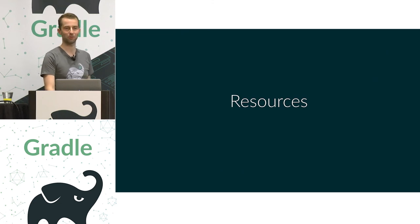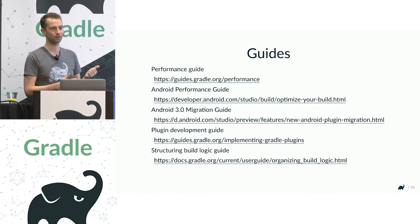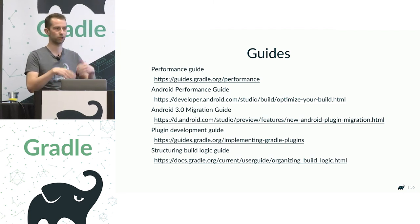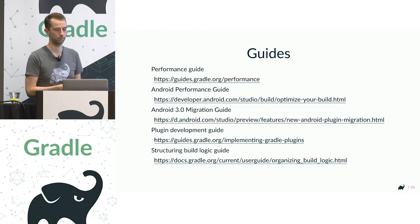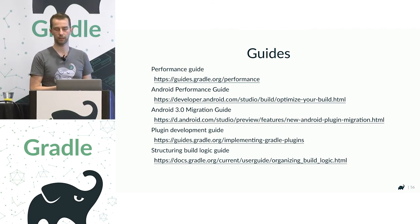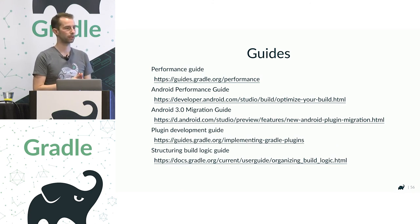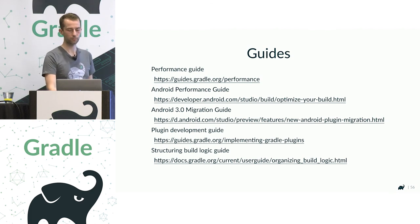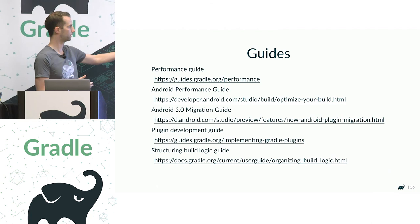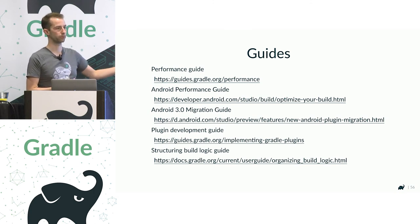Since you probably won't remember everything, here are some resources: the Gradle performance guide explains all general Gradle recommendations that also apply to Android builds. The Google team has written an Android performance guide — you should definitely look at that. There's also a migration guide to Android plugin 3.0 if you're struggling with changes, and for plugin authors, the plugin development guide covers incremental task inputs and the structuring build logic guide covers script plugins and buildSrc.